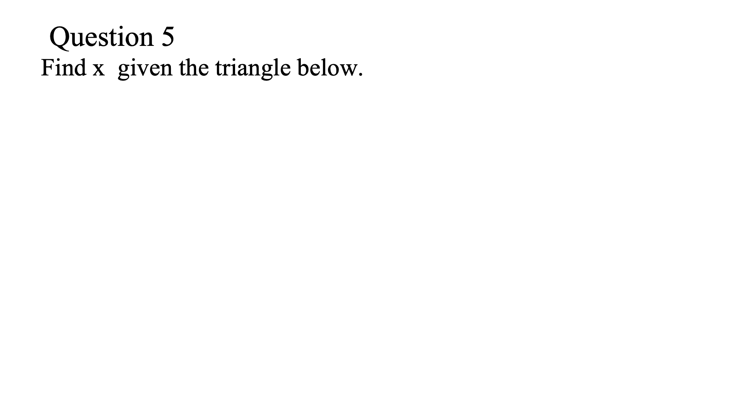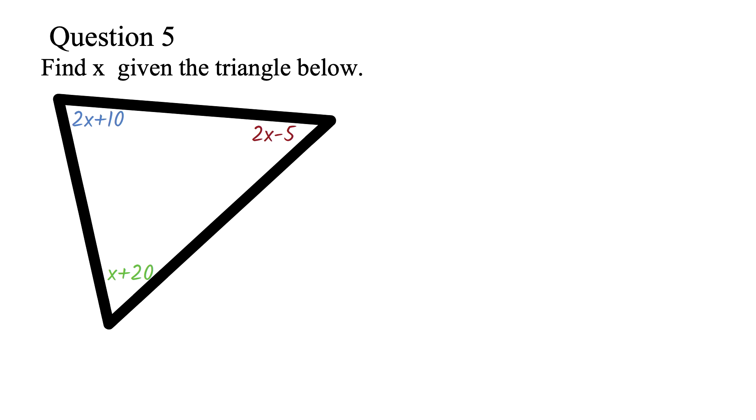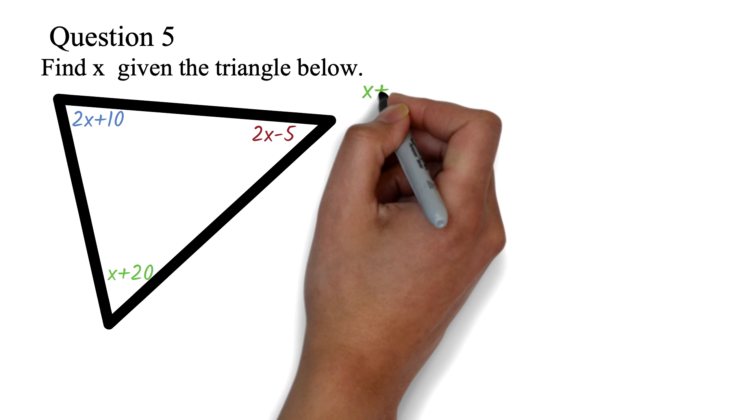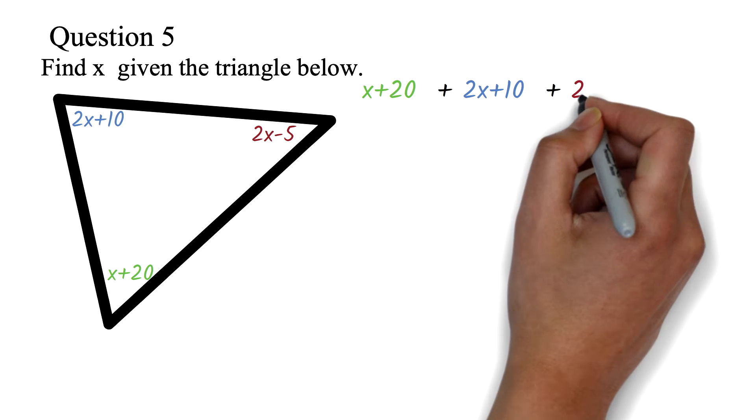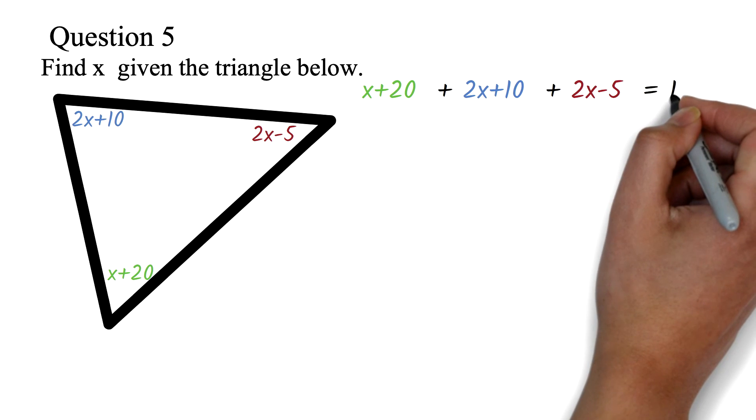Question 5. Find X given the triangle below. Questions like this is the reason why I like the setup of adding all the interior angles and equating it to 180. We add up the angles. X plus 20 plus 2x plus 10 plus 2x minus 5 equals 180.